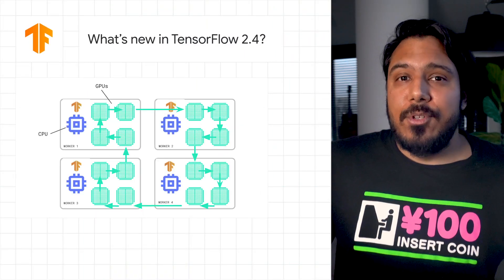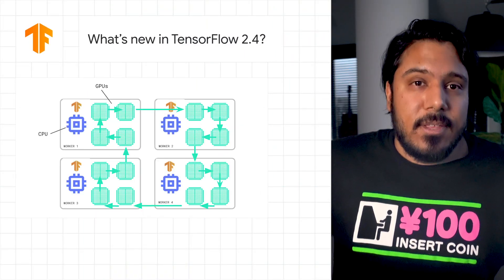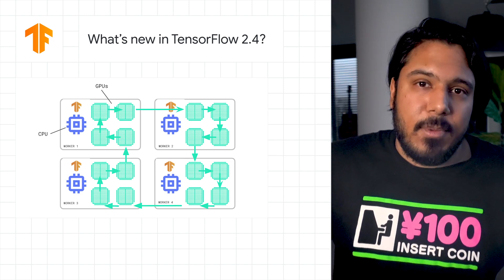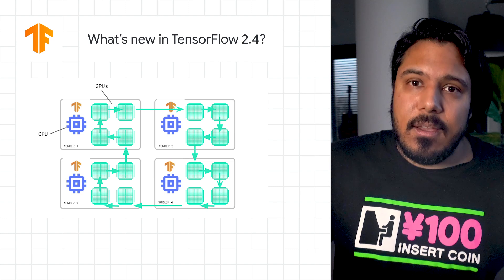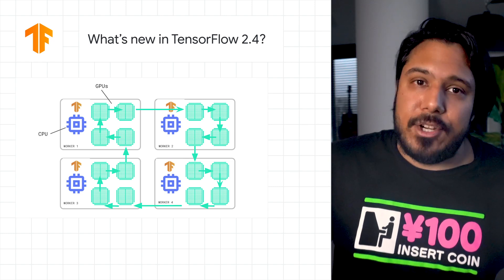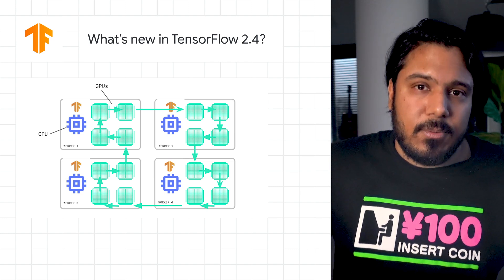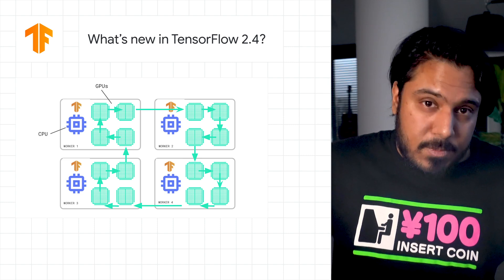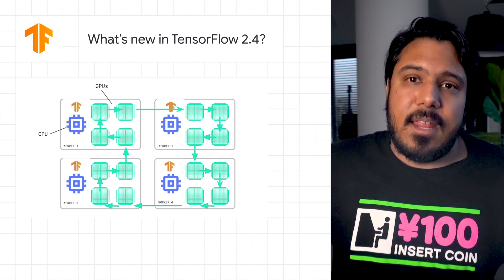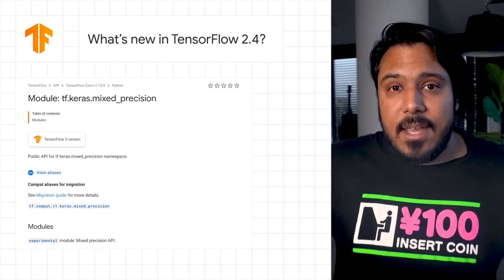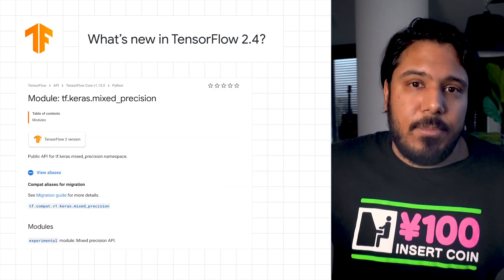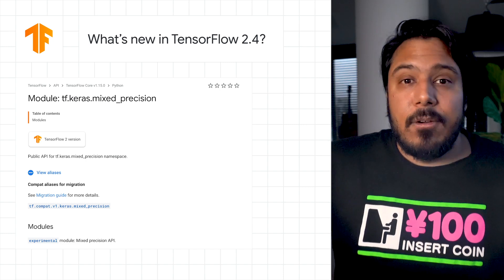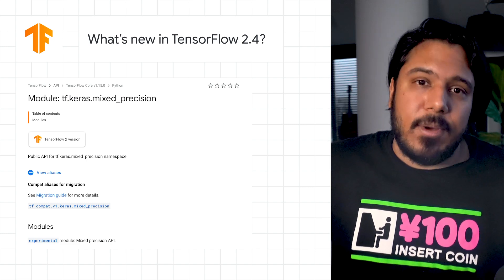TensorFlow 2.4 is here. This includes new features in the TF Distribute module, like experimental support for asynchronous training of models with parameter server strategy. This release also marks the graduation of the multi-worker mirrored strategy from experimental to the stable API. On the Keras side, the mixed precision API has also graduated from experimental to the stable API. We've also refactored the Keras optimizer,